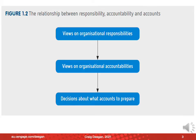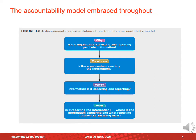In chapter one, we use a reasonably simple diagram to explain that views on organisational responsibilities impact views about organisational accountabilities, which in turn impacts the decisions about what accounts to prepare and how we might do our accounting. Chapter one introduces this accountability model, which we utilise throughout the book to explain different types or different focuses of accounting.